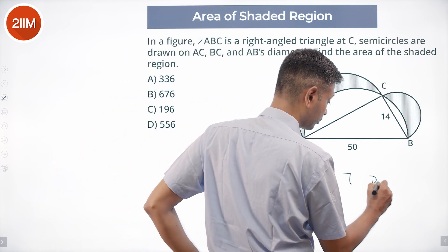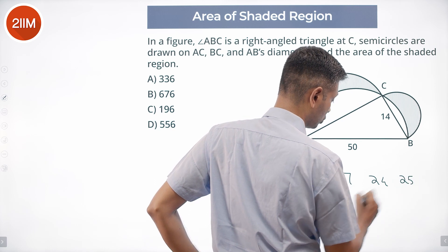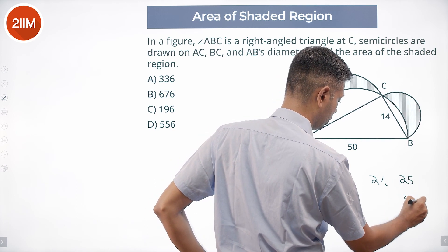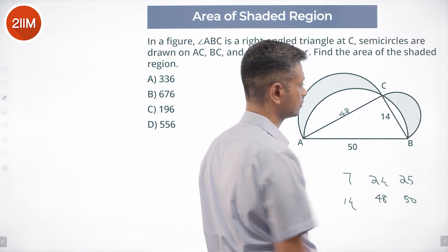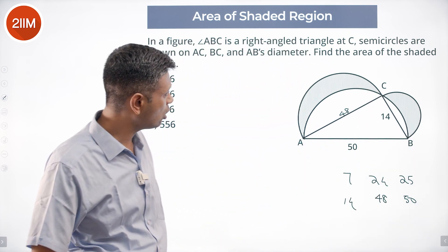So this is 14, this is 50, it should be 48. Lovely. Now how do we find the area of the shaded region?